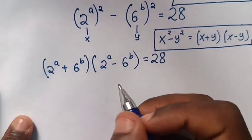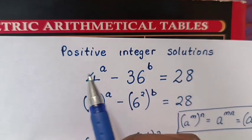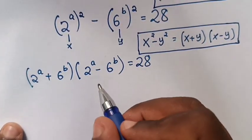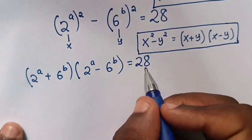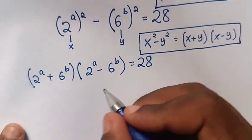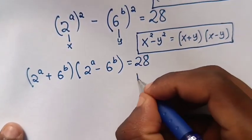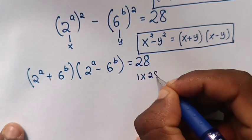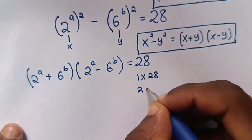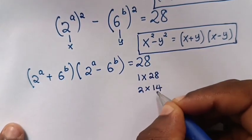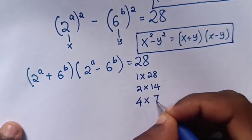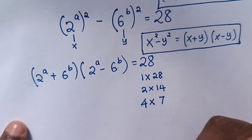Now remember that this is positive integer solutions. So to get 28, this times this equals 28. The product of two positive numbers is either 1 times 28, or 2 times 14 equals 28, or 4 times 7 equals 28.